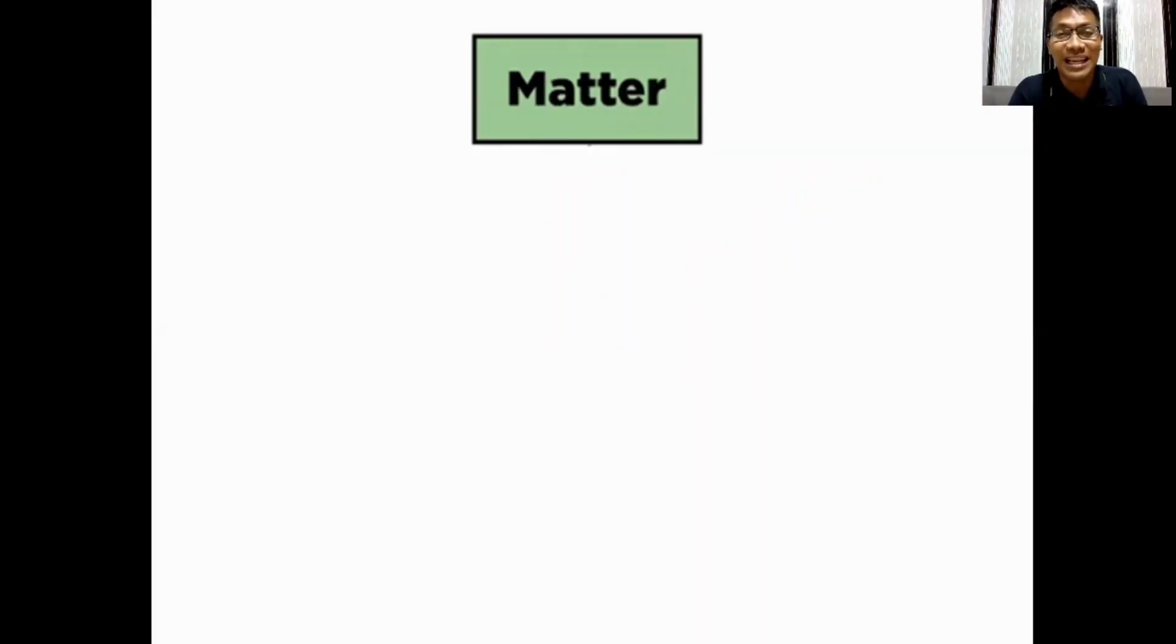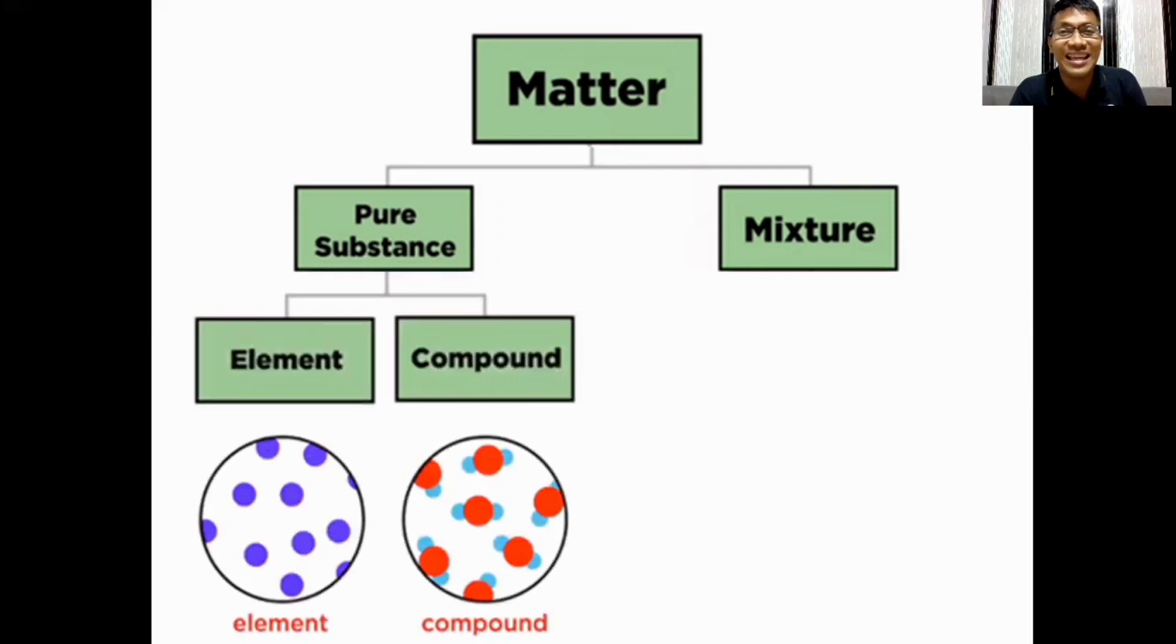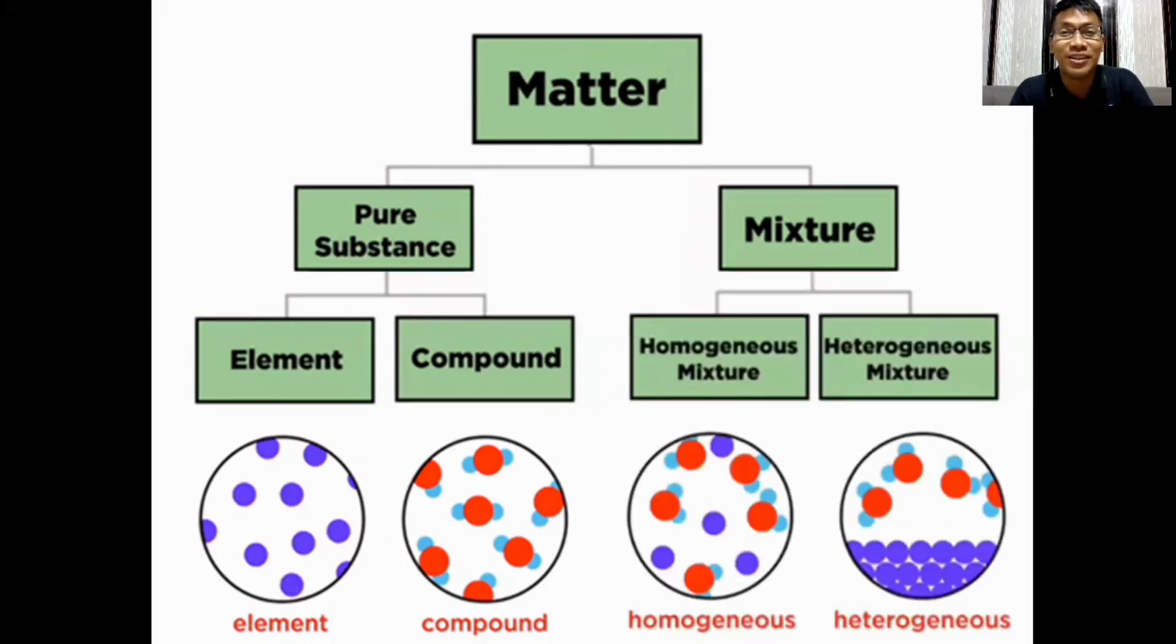Matter can be classified as pure substance and mixture. Pure substance can be further divided into two: elements and compounds. Mixture can also be divided into two, homogeneous mixture and heterogeneous mixture. But for this lesson, we're going to focus on elements.